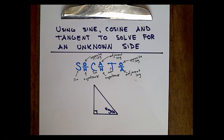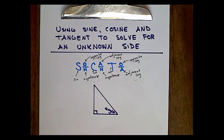In order to use sine, cosine, and tangent to solve for any unknown side of a triangle, we first need to remember what sine, cosine, and tangent represent.